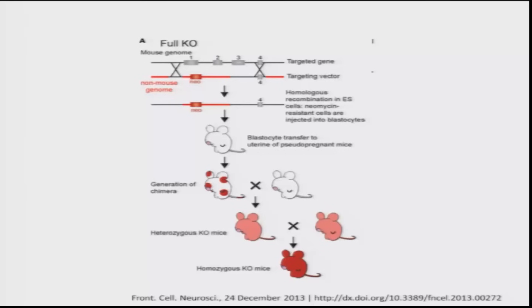Welcome to this new lecture on functional genomics. In the previous lecture we looked into how genes can be knocked out, meaning mutated, in animal models like the mouse, where a specific region of the gene can be deleted so you can understand the function of the gene in the organism.